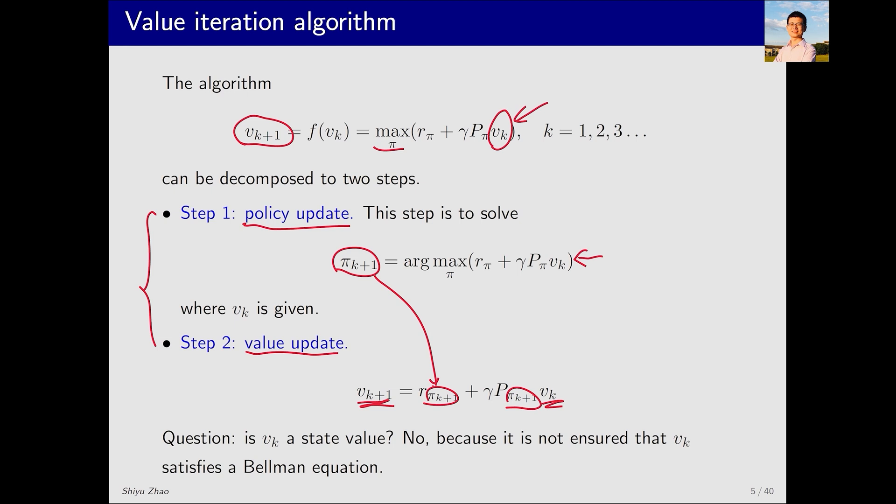But, before that, let's answer a small question. Is v_k a state value? At first glance, it seems like v_k is a state value because it's in such an equation. But if you look closely, the right-hand side is v_k and the left-hand side is v_k+1. If the left-hand side were v_k, then it would indeed be a Bellman equation and v_k would be a state value. But the left-hand side is not v_k. So, this is not a Bellman equation and v_k is not a state value. It can be any value and may not be a state value.